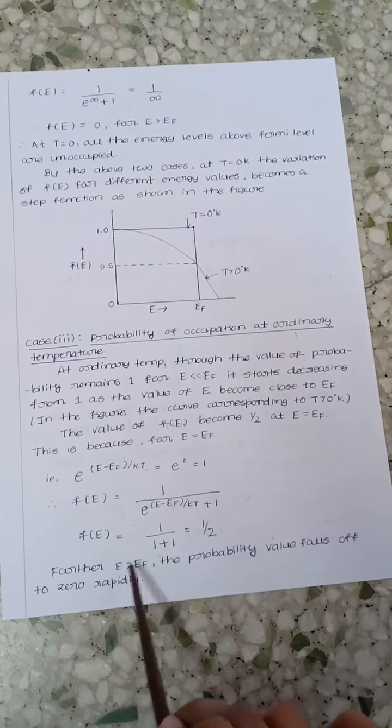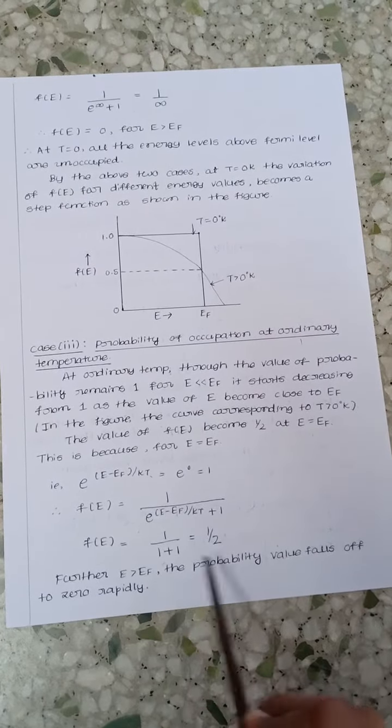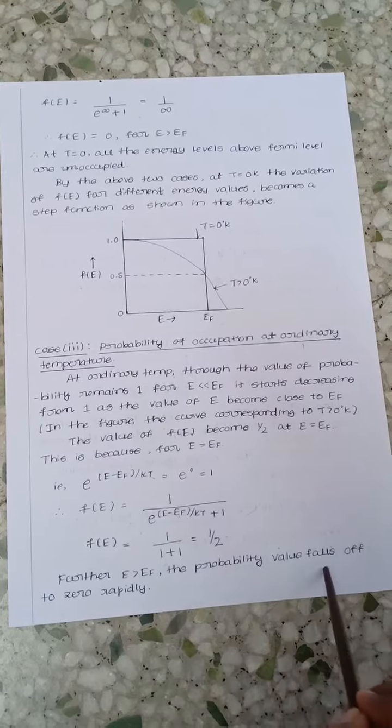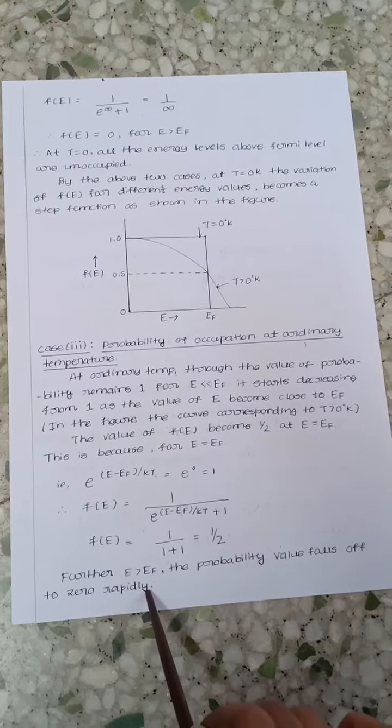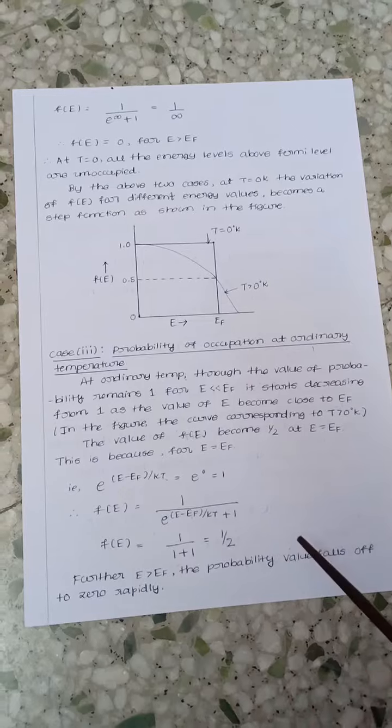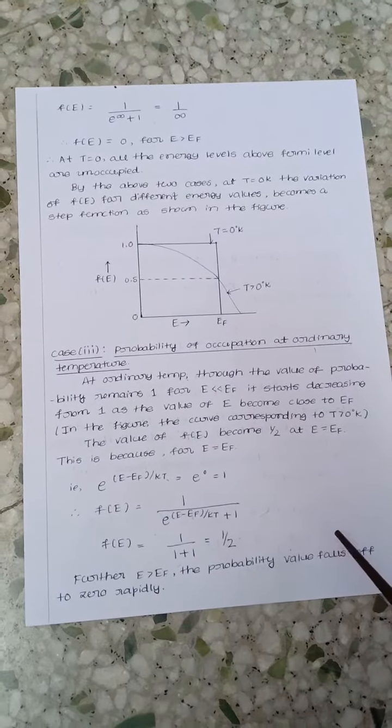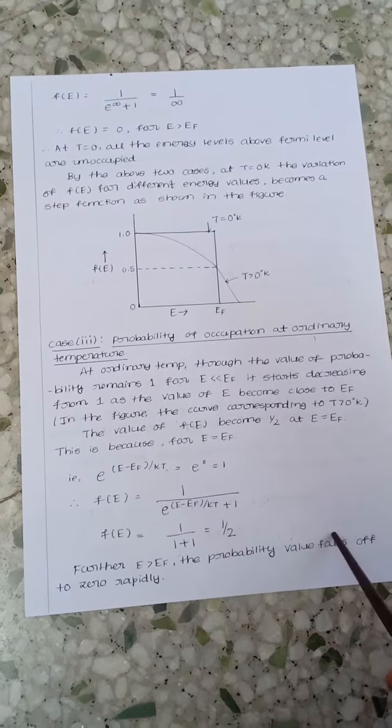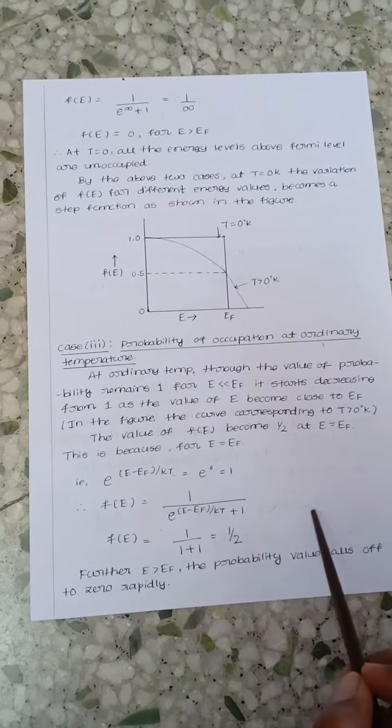So when energy is greater than Fermi energy the probability value falls off to zero rapidly. That means the Fermi energy level represents the energy state with 50% probability.